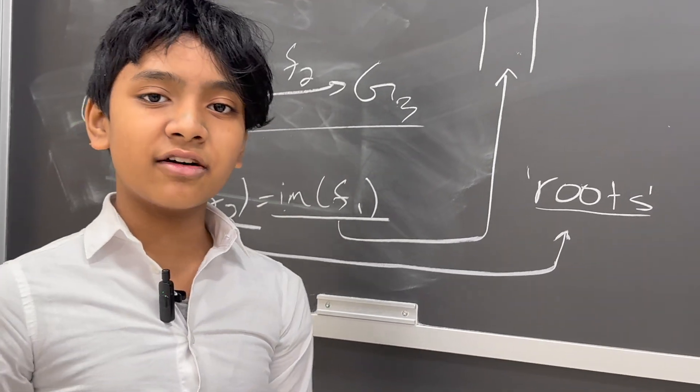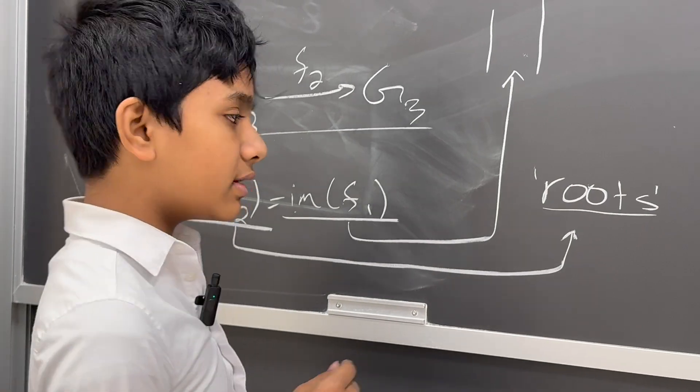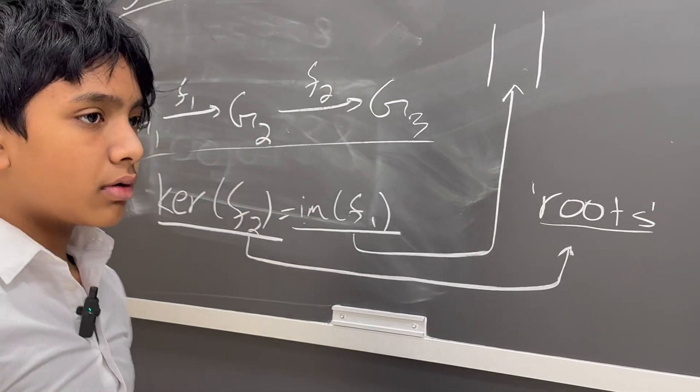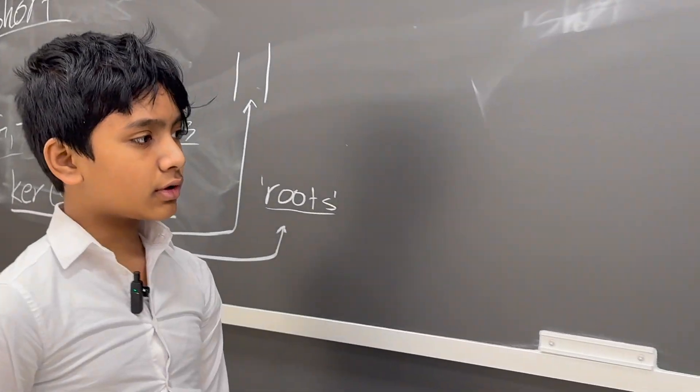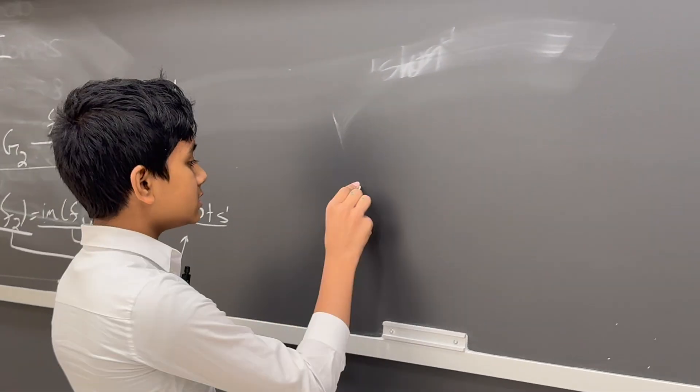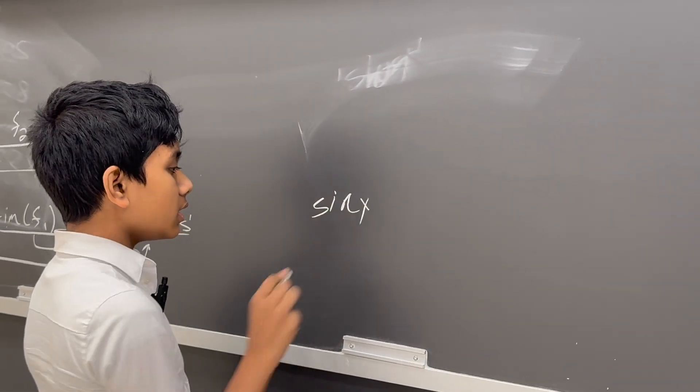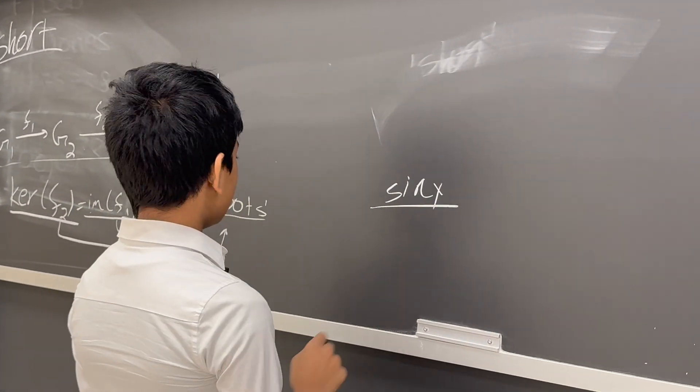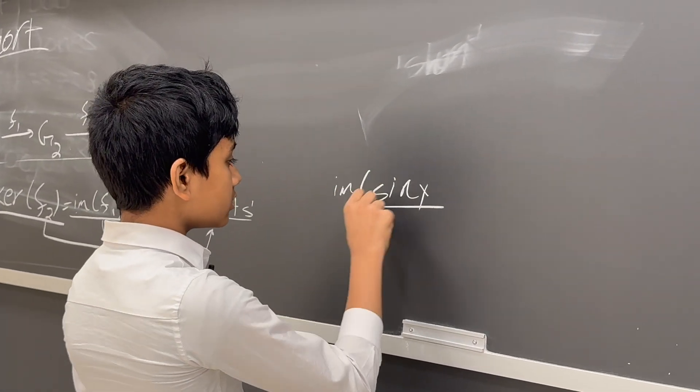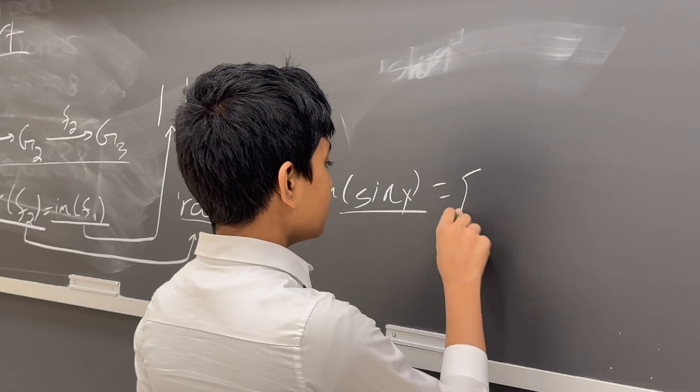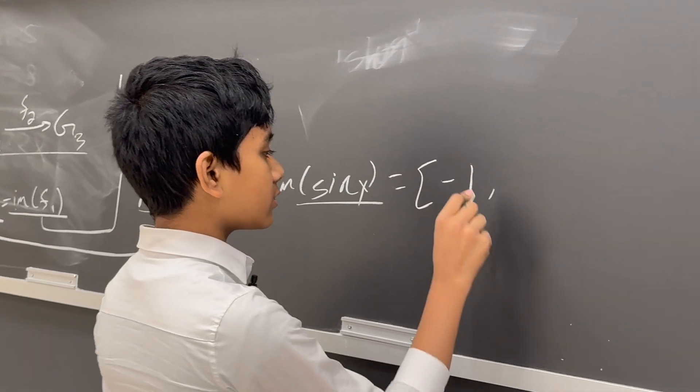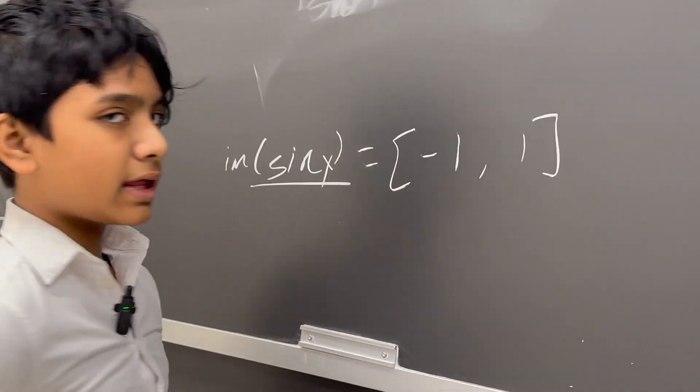The image of f1 is just kind of like the range. So what is the set of possible values that the function will map to? For example, if we had sin(x), this would be the image of sin(x) would be the set of integers from minus 1 to 1 on that interval.